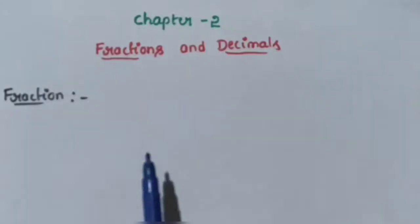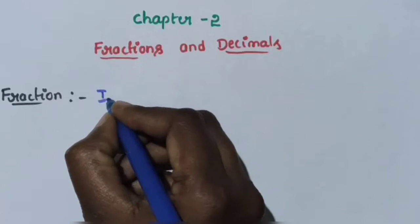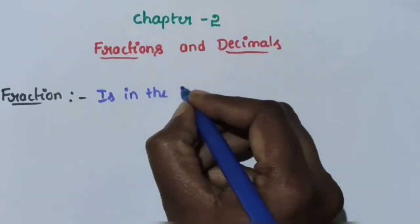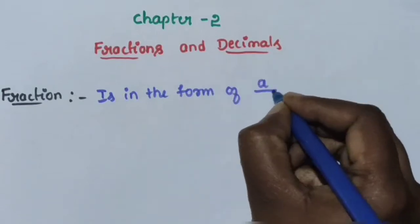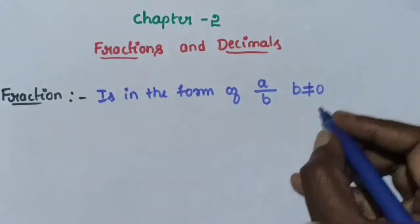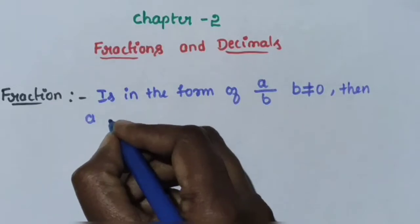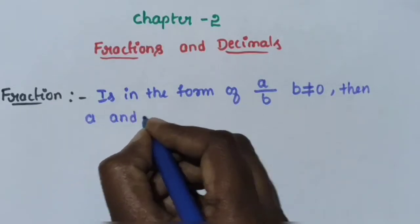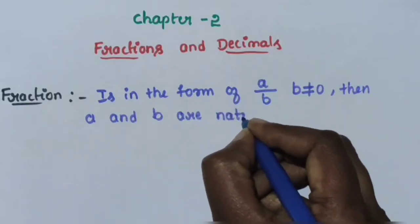You have already known about fractions and types of fractions. Just recall: what do you mean by fractions? A fraction is in the form of A by B, where B is not equal to 0, and A and B are natural numbers.